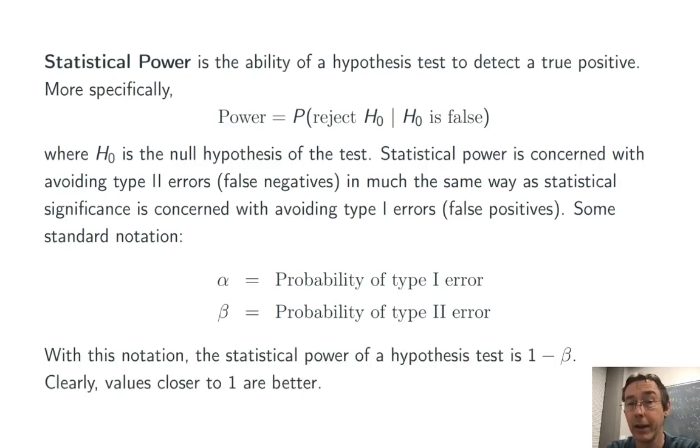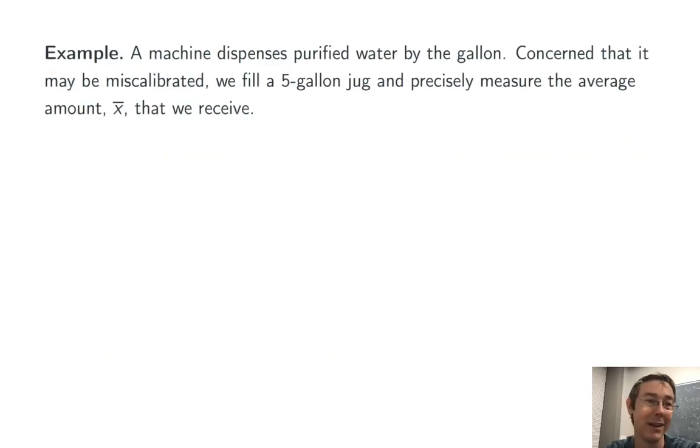Statistical power of a hypothesis test using this notation is just 1 minus beta. So it's the probability of not having a type 2 error in the circumstance where the null hypothesis is false. Obviously we would like values closer to 1 in this circumstance. We'd like beta to be a small value if possible.